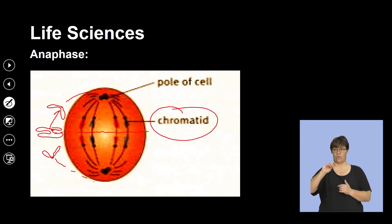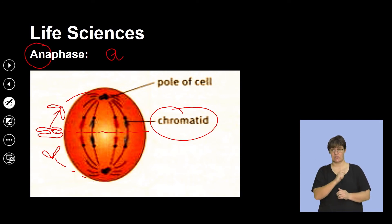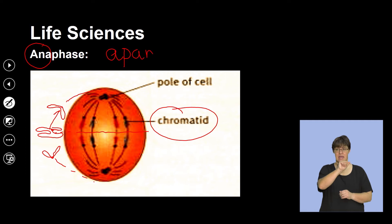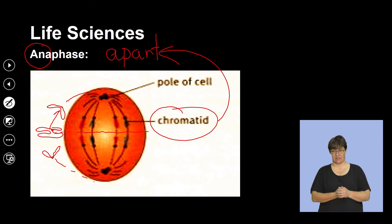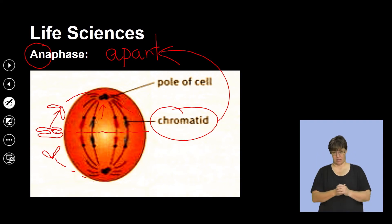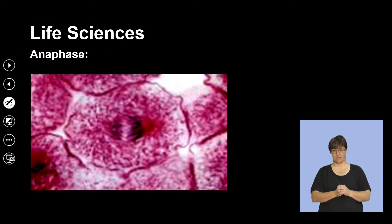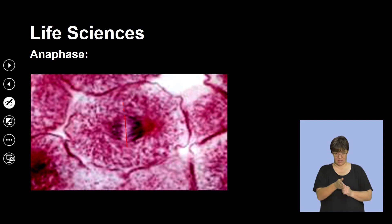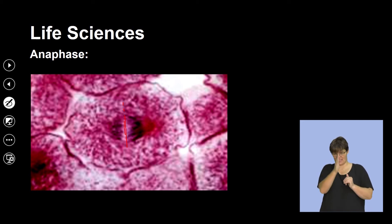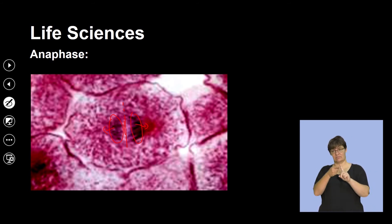The spindle fibers contract and split each chromosome into its chromatids, which are then pulled apart. Use the letter A to remind you of 'apart.' We can clearly see in the image a lighter distribution along the middle but a movement of chromatids towards the opposite poles.